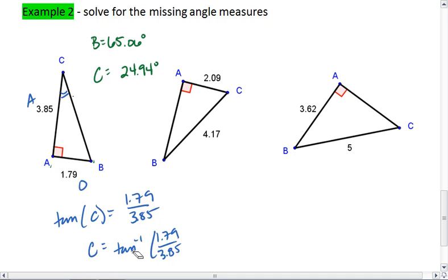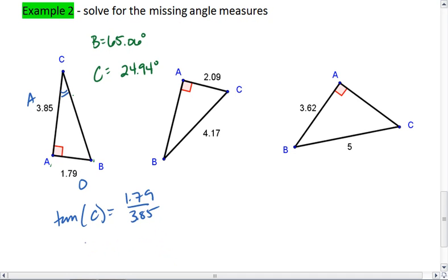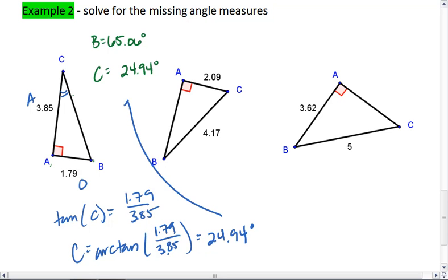C equals tan inverse of 1.79 over 3.85. Or, just for kicks, let's use a different notation. C equals arc tan 1.79 over 3.85. Plug this into our calculators. And we get 24.94. Same answer as above. So that checks out.